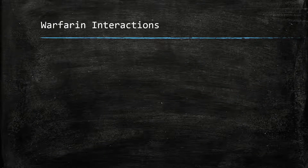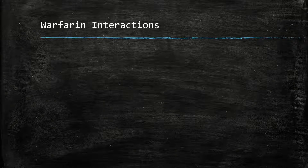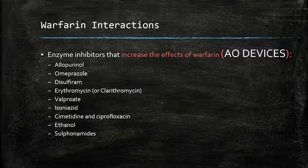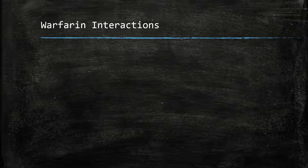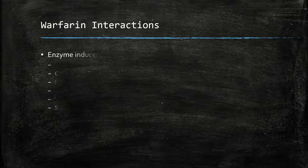Interactions of warfarin. Warfarin is metabolized by the cytochrome P450 system, and therefore enzyme inhibitors of this system increase the effects of warfarin. A mnemonic to remember this is AO DEVICES: Allopurinol, Omeprazole, Disulfiram, Erythromycin or Clarithromycin, Sodium valproate, Isoniazid, Cimetidine, Ciprofloxacin, Ethanol, and Sulfonamides.